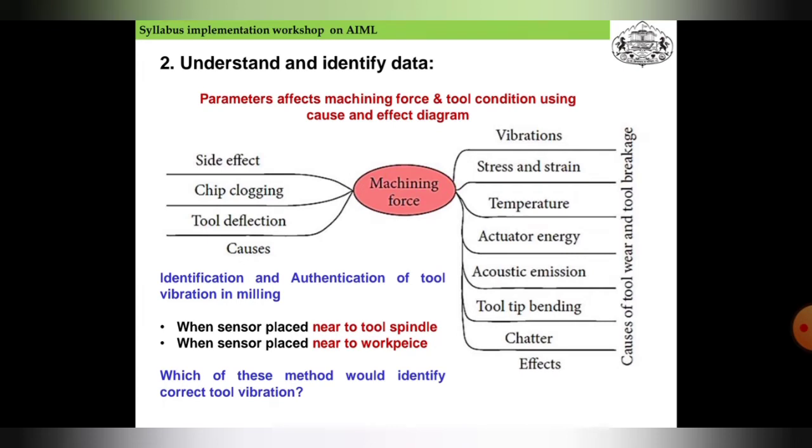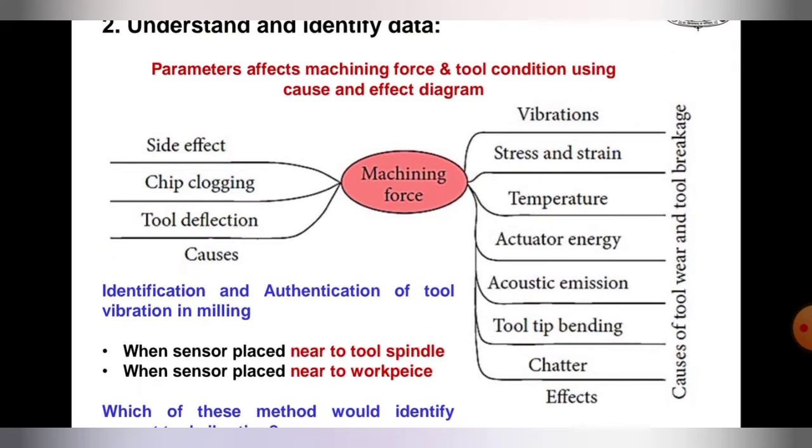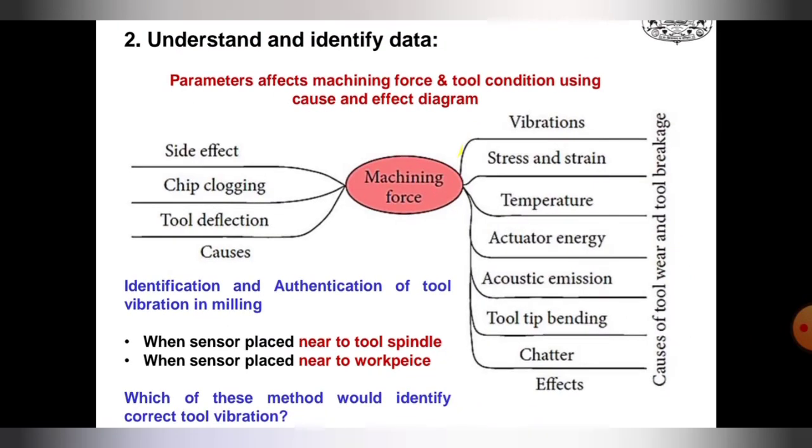Now come to the next one: parameters affecting machining force and tool condition using cause and effect diagram. We can see side effect, chip clogging, tool deflection cause will affect machining. The machine learning will emphasize vibrations, stress and strain, temperature, actuator energy, acoustic emissions, tool tip bending, chatter effects. These parameters affect machining force.